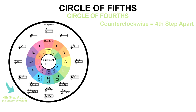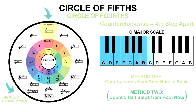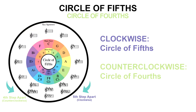You can also move around the circle counterclockwise. If you go counterclockwise, each key is a fourth step down from the last, which is why the circle of fifths can also be referred to as the circle of fourths. For example, in the C major scale — C, D, E, F, G, A, B — if you count four keys up from C, you get F. So just remember: clockwise is fifths, counterclockwise is fourths.